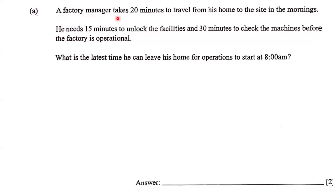A factory manager takes 20 minutes to travel from his home to the site in the mornings. He needs 15 minutes to unlock the facilities and 30 minutes to check the machines before the factory is operational. What is the latest time he can leave his home for operations to start at 8 a.m.?